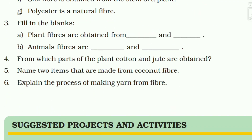'Polyester is a natural fiber' — this is false; polyester is a synthetic fiber. Question 3: Fill in the blanks. Plant fibers are obtained from cotton plants and jute plants. Animal fibers are obtained from wool — from sheep, goat, yak etc. — and silk, which is obtained from silk worms.